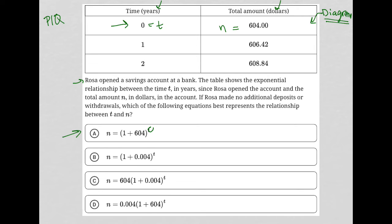So choice A, if I replace this with zero, one plus 604 is 605, and 605 to the zero power is just one. So I'd have N equals one, but I want N equals $604. So A is gone.